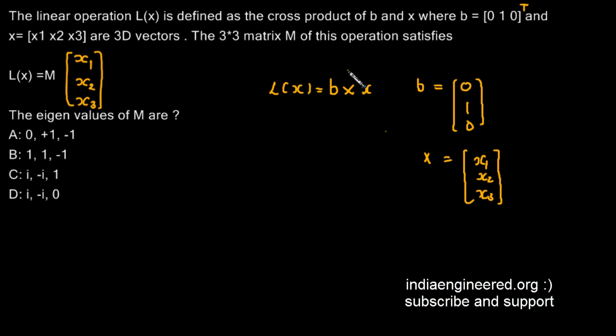So we are given two conditions: L(x) is b cross x, and we have to find out what is the matrix M such that this relation is satisfied. First we will see what is b cross x. Both are three-dimensional vectors, so we can define the cross product.